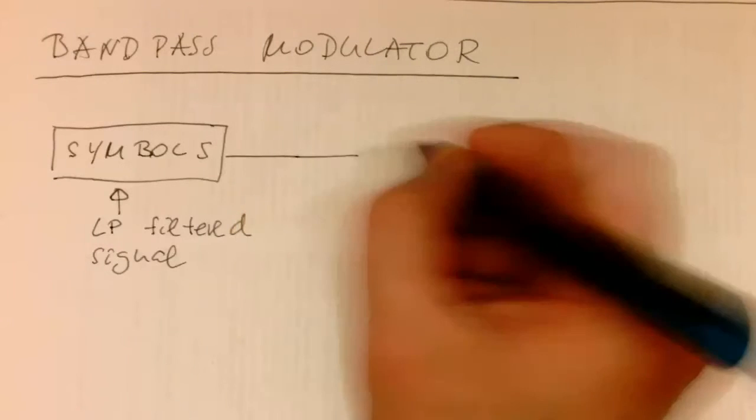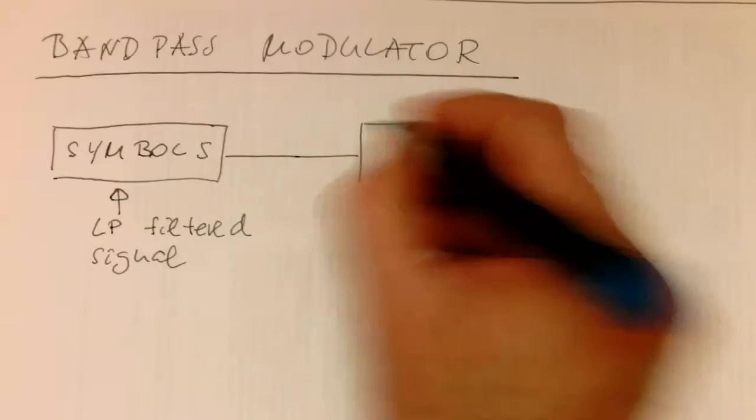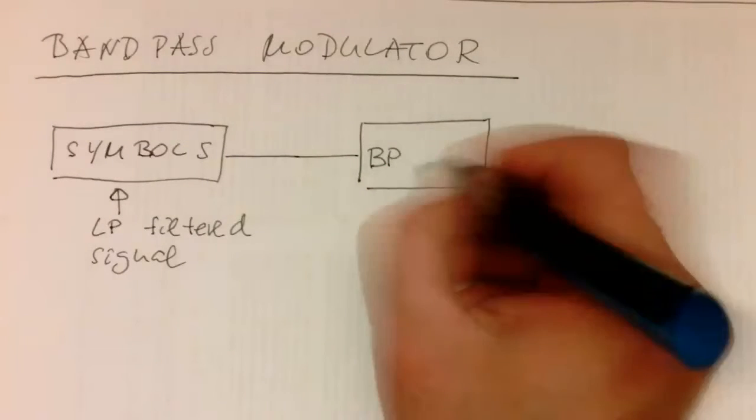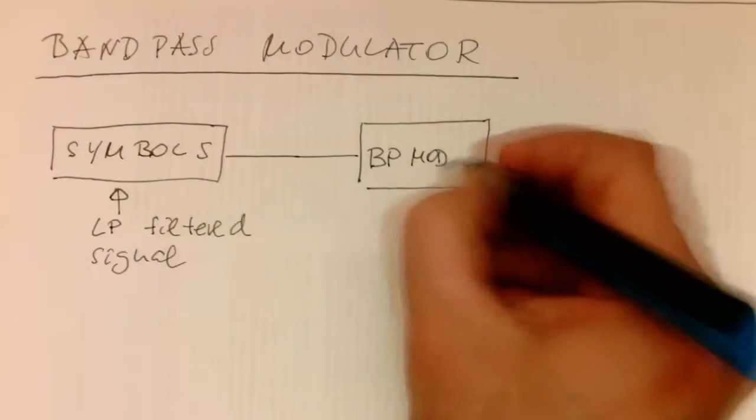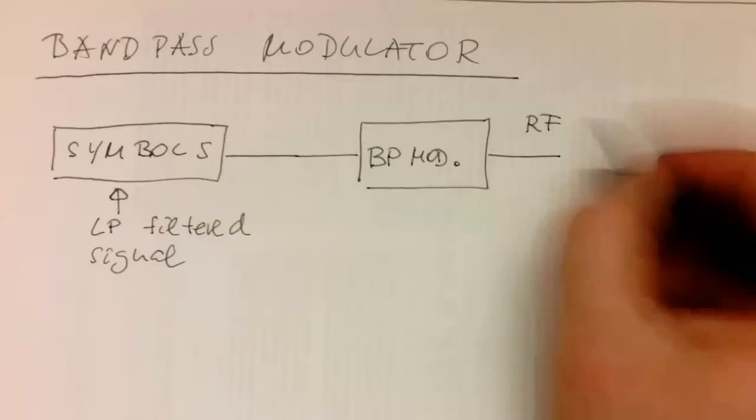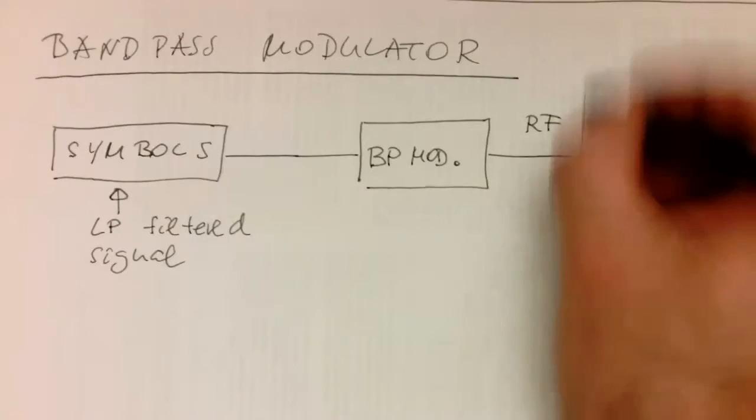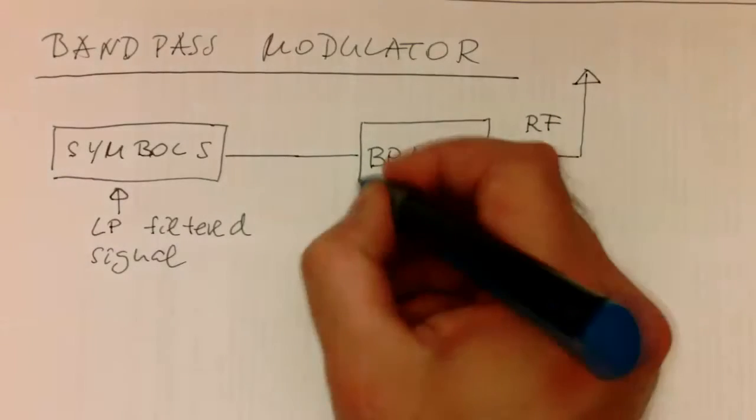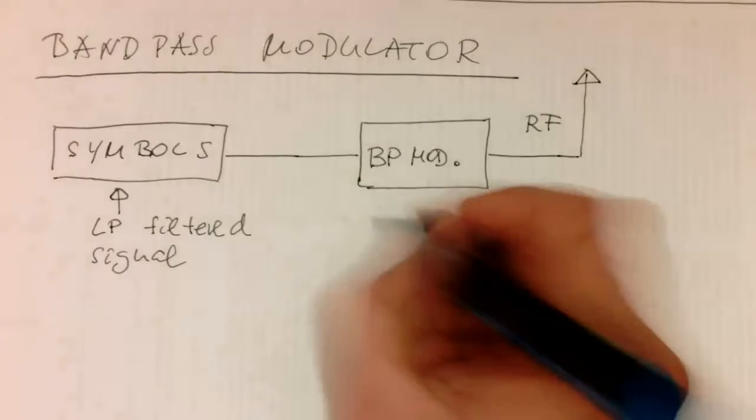So now what we need to do is, we need to have a BandPass modulator, which is then creating us the RF signal, or sometimes we need to have another mixer to get this higher up to the RF. Yeah, so this is our BandPass modulator.